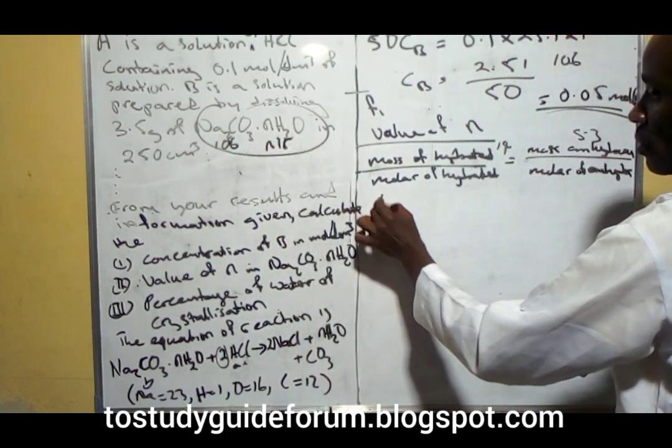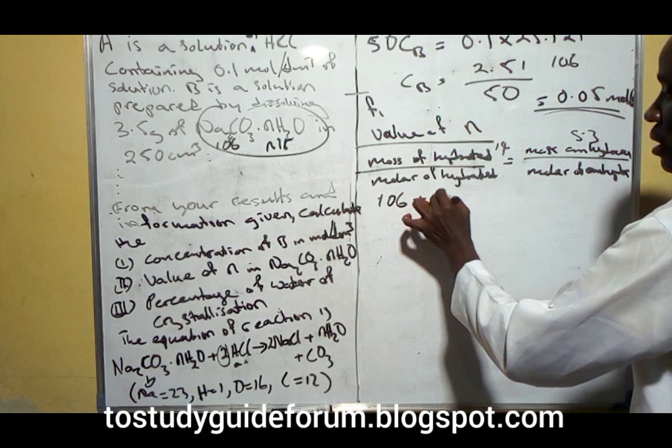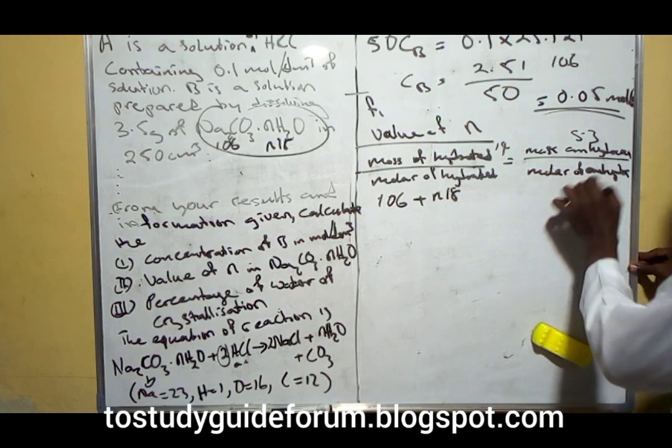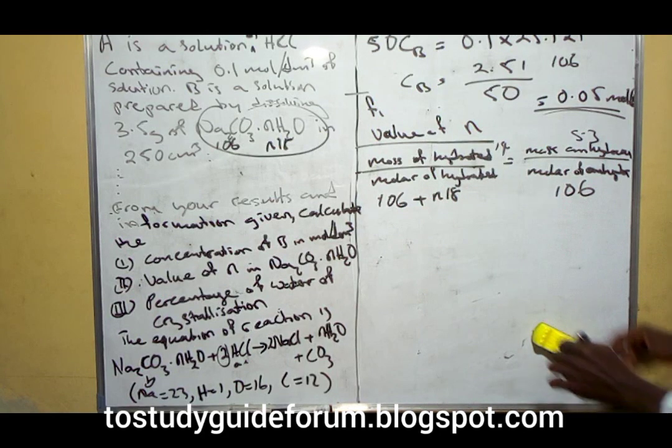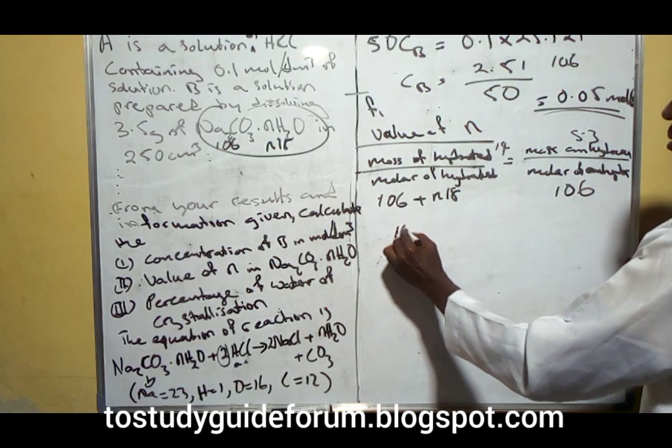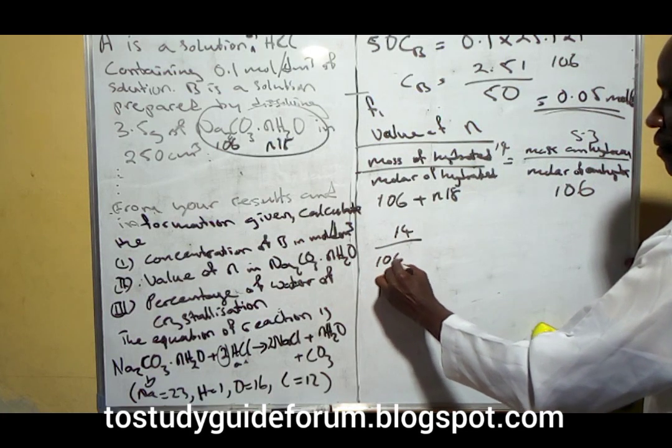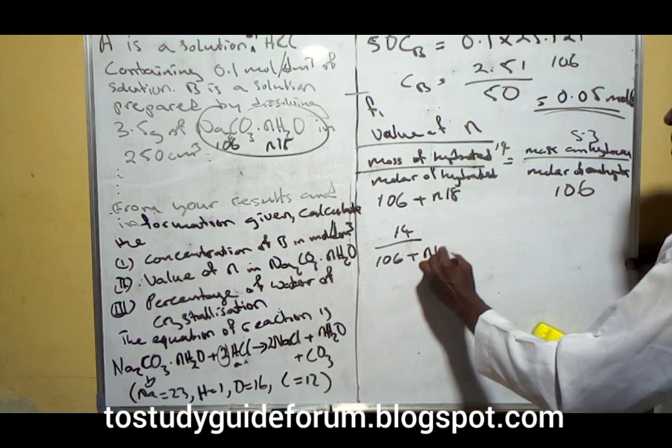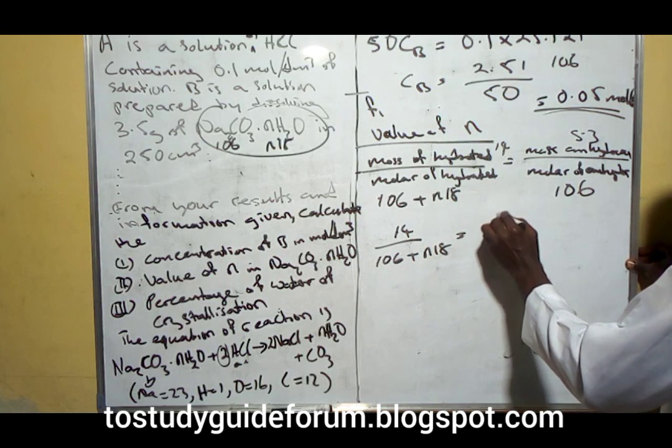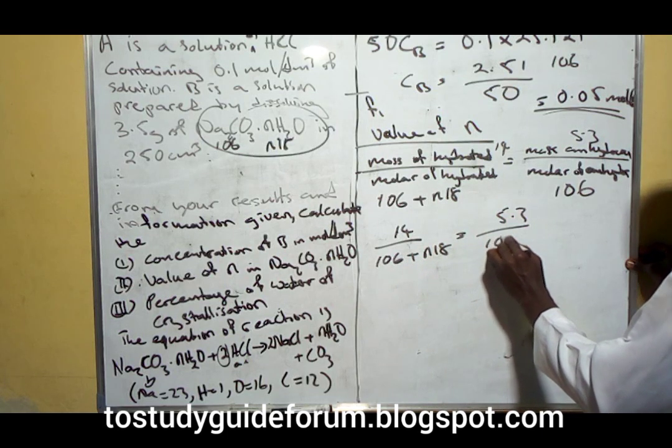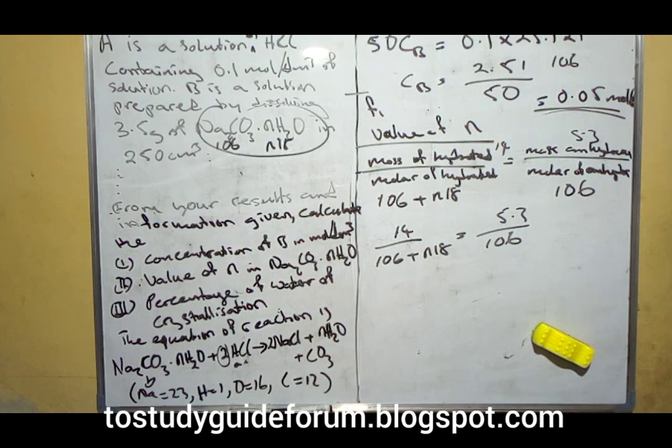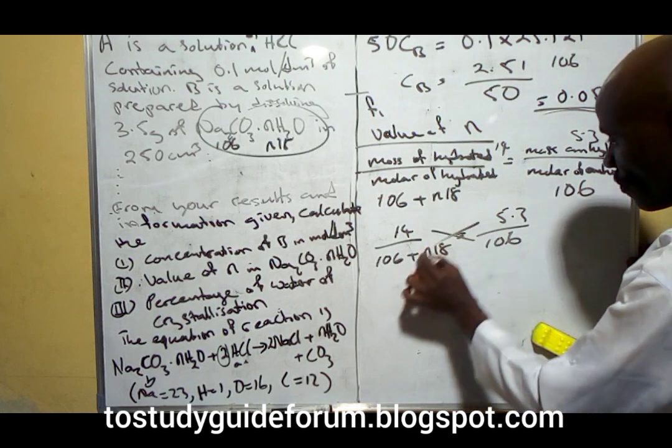The molar mass of the anhydrous salt is 106 plus n times 18, because water is 18. We can work on it and get 14 over 5.3 equals 106 plus n18 over 106.